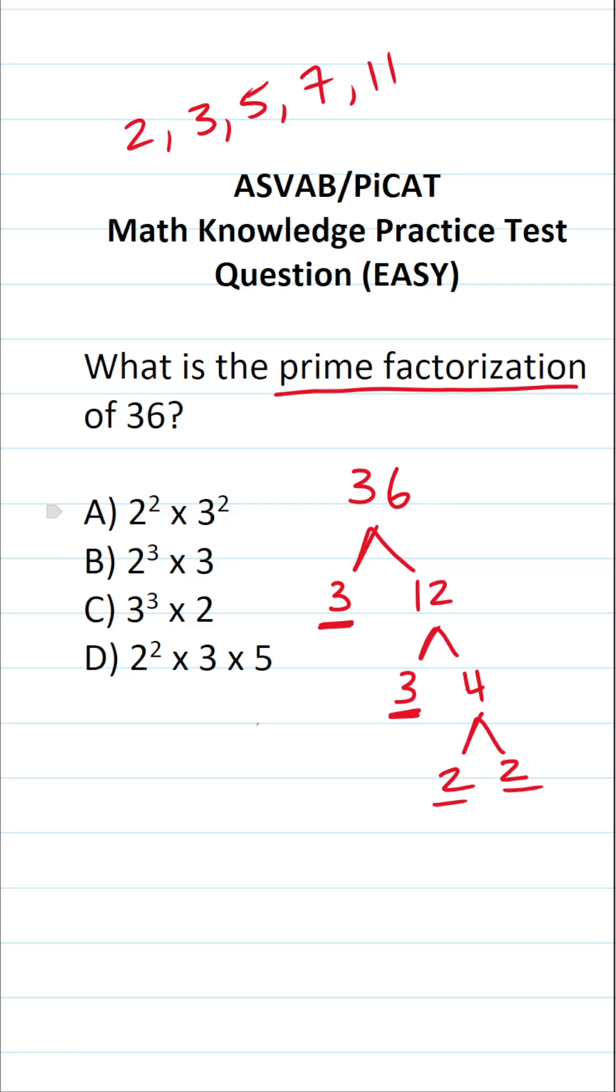So now that we've broken this down as much as possible using a factor tree, let's circle those prime numbers in our factor tree, and then all we're going to do is take those numbers that we circled and multiply them together. So this becomes 2 times 2 times 3 times 3.